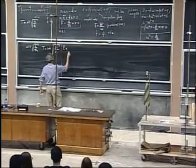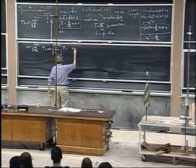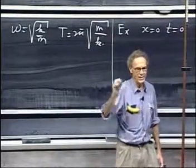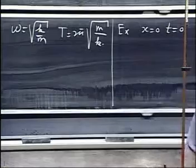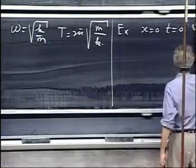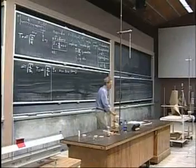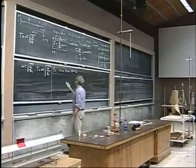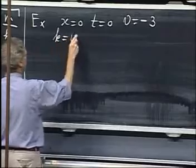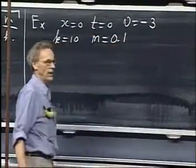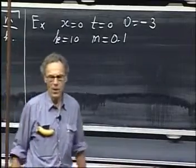So in this example, I release the object at x equals zero, at t equals zero. So I release it at equilibrium. At that moment in time, I give it a velocity, which is minus three meters per second. My units are always in MKS units. The spring constant k equals ten newtons per meter, and the mass of the object is 0.1 kilogram. And now I can ask you, what now is x as a function of time, including the amplitude A, including the phase angle phi?